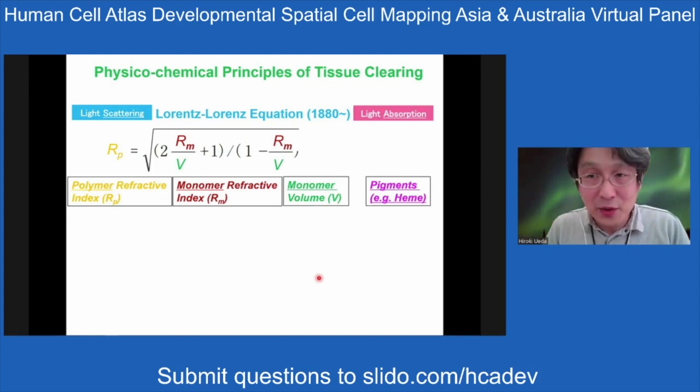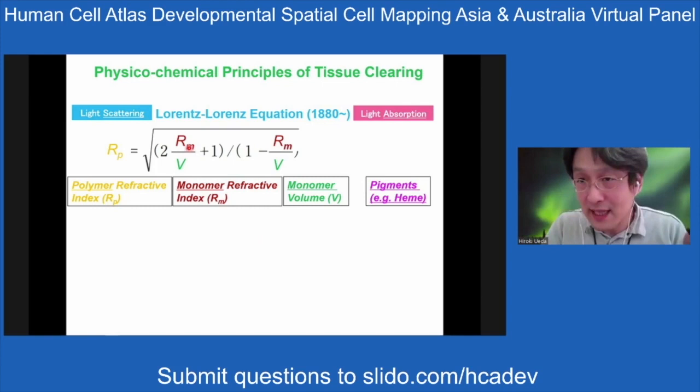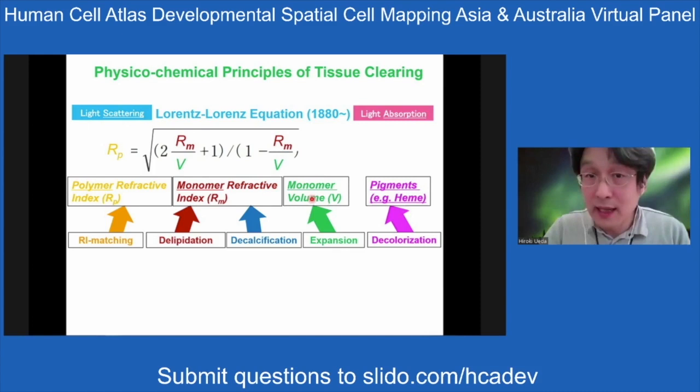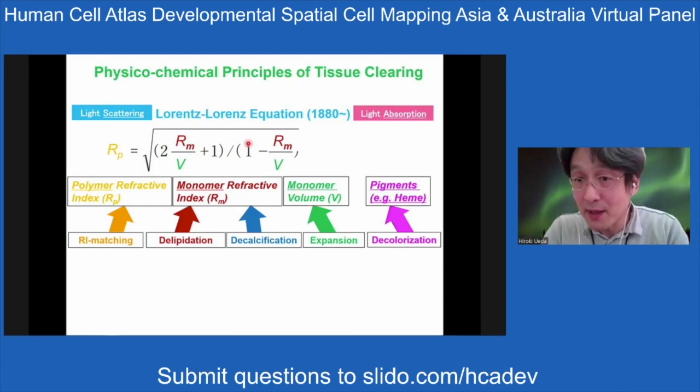If this is true, we can use very old equations describing the refractive indices of polymers. We can characterize tissue refractive indices using monomer and unit refractive indices. Delipidation, decalcification, and expansion contribute to monomer refractive indices or monomer volume, and the composite organ refractive indices should be matched with the medium's refractive index. In addition to reducing light scattering, we can reduce pigments by reducing light absorption. Each elementary process can be achieved by special chemical structures — details are described in our review paper.